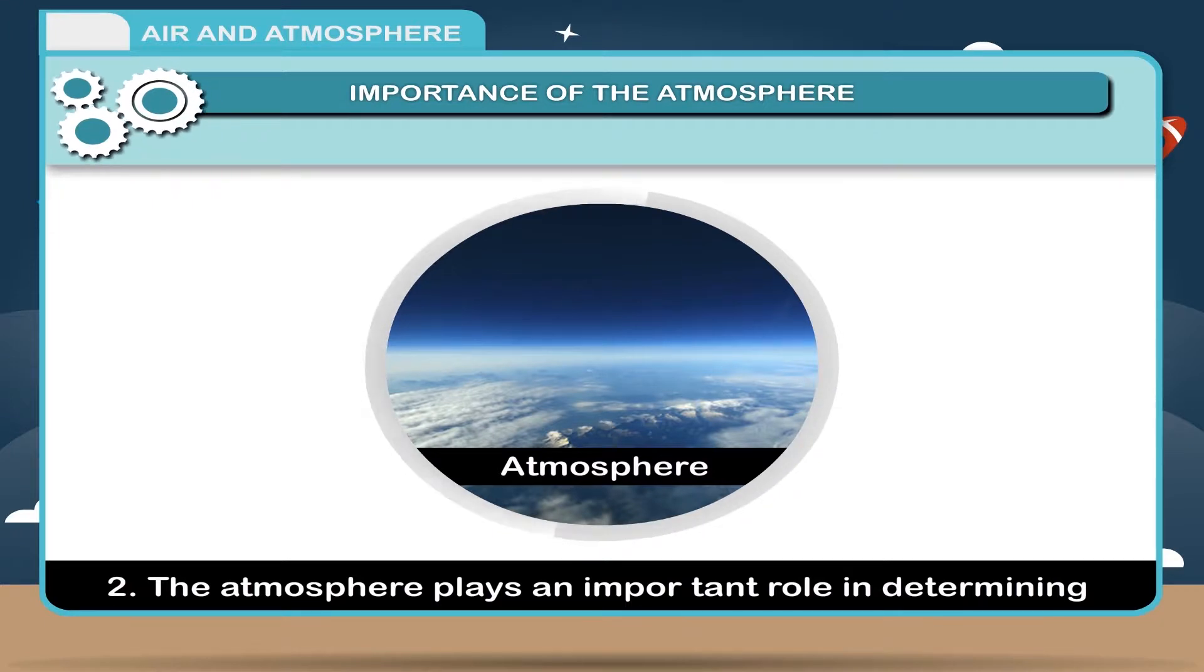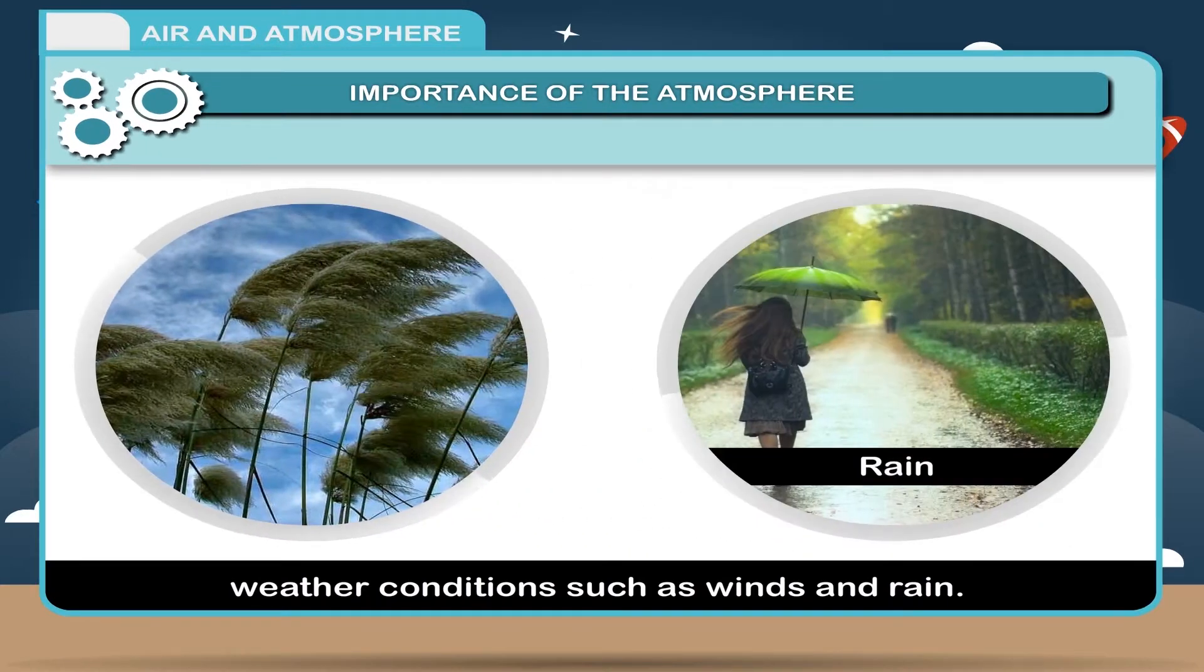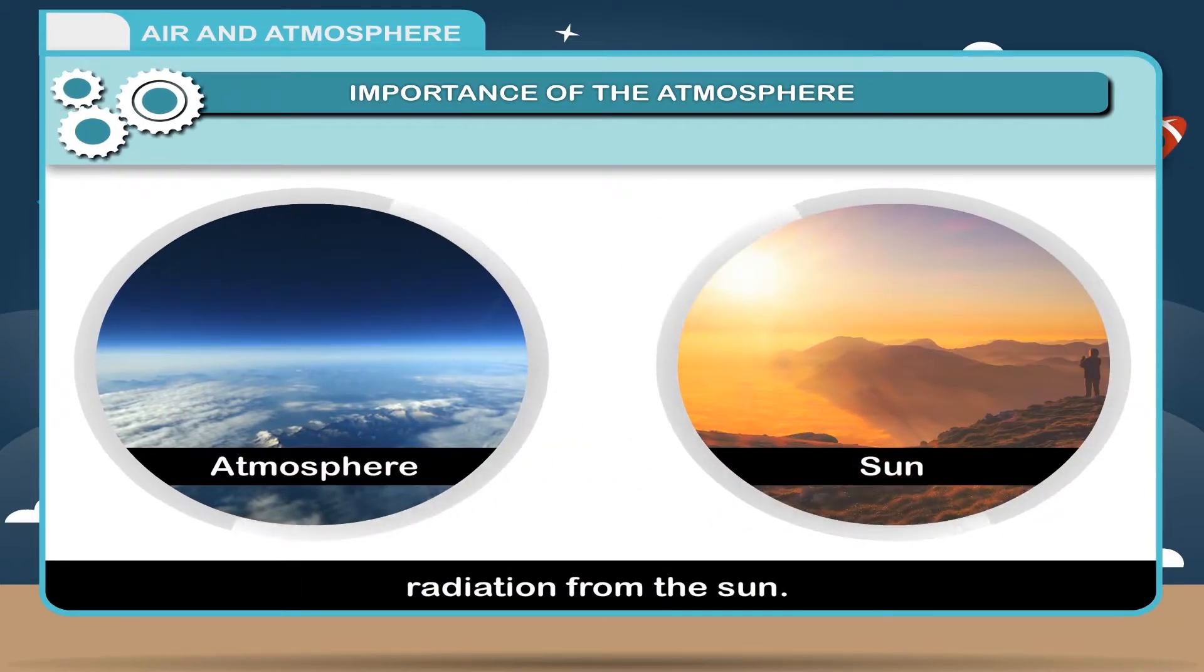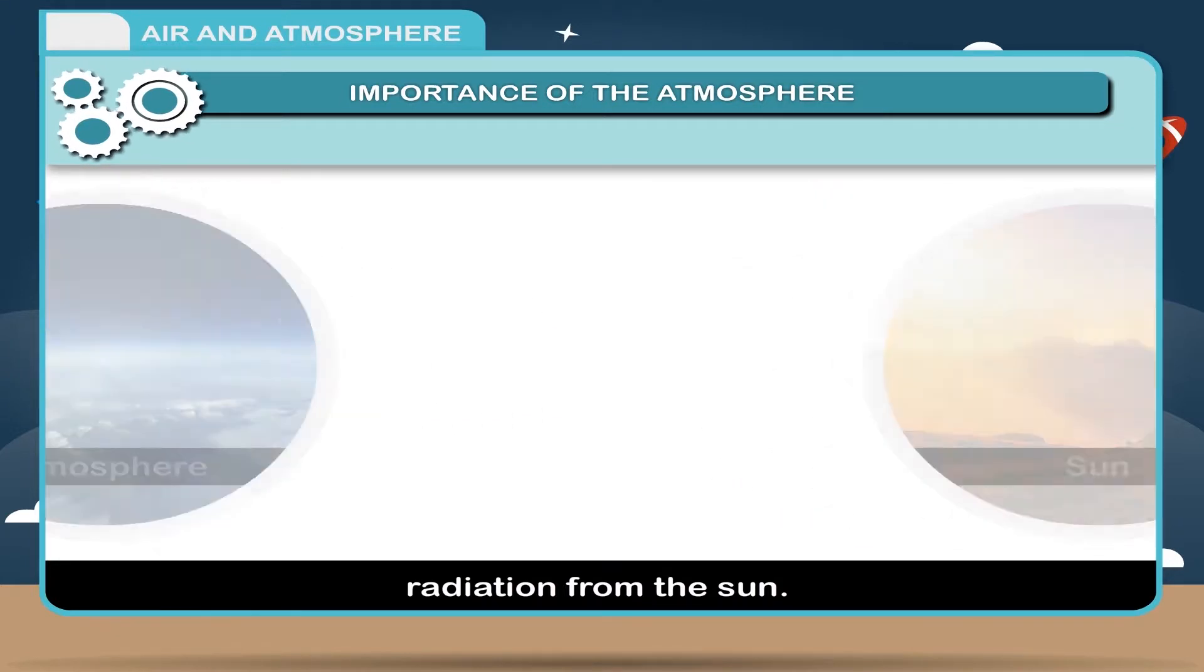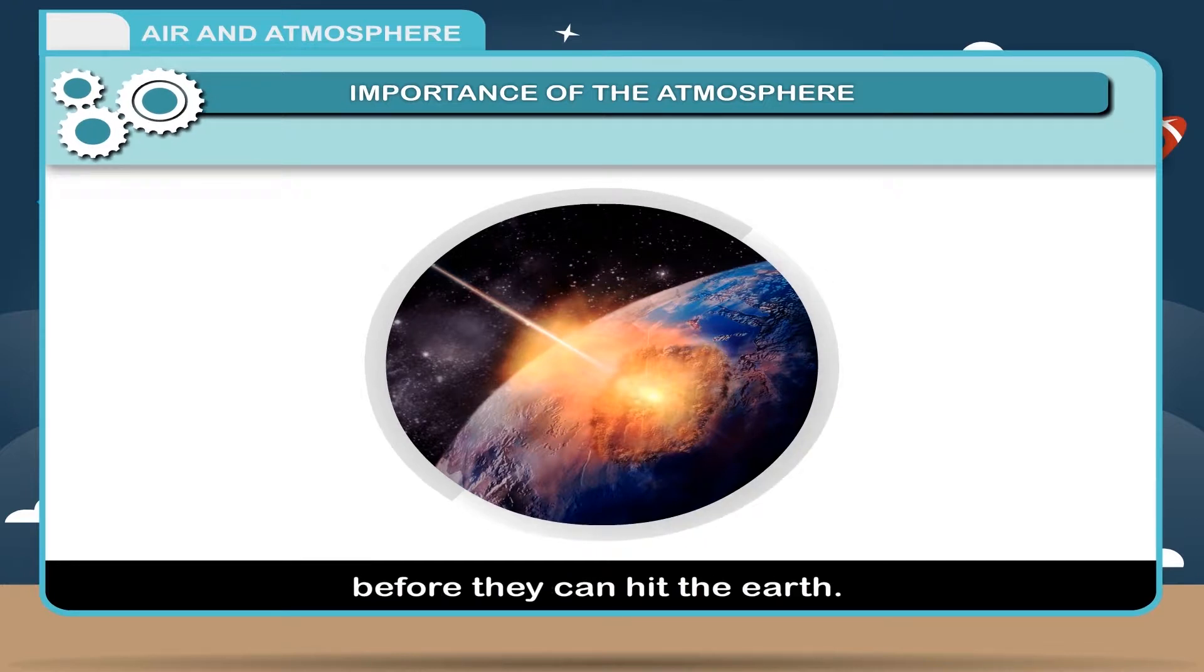The atmosphere plays an important role in determining weather conditions such as winds and rain. The atmosphere blocks out harmful ultraviolet radiation from the sun. Most meteors burn up in the atmosphere before they can hit the earth.